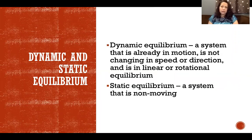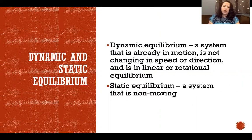Dynamic equilibrium means the system is already in motion but not changing in speed or direction—which is velocity—and it would be in either linear or rotational equilibrium. Static equilibrium is when a system is not moving, but again, it would be in either linear or rotational equilibrium.